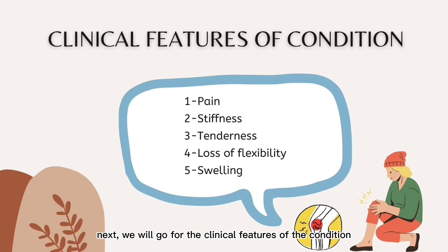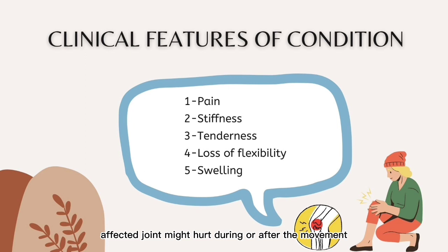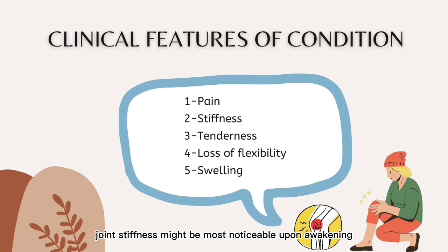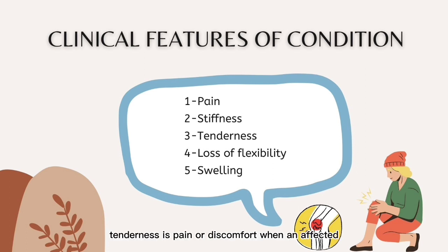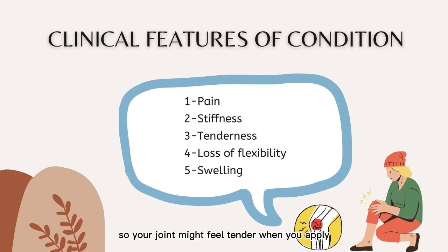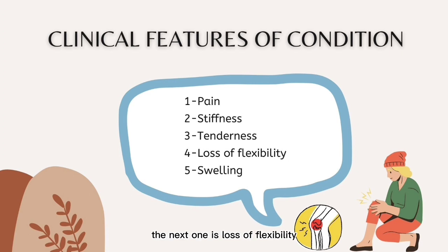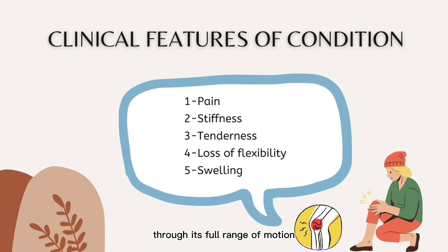The clinical features of the condition include: first, pain — the affected joint might hurt during or after movement. Second, stiffness — joint stiffness is most noticeable upon awakening or after being inactive. Third, tenderness — pain or discomfort when an affected area is touched, so your joint might feel tender when you apply light pressure to or near it. Fourth, loss of flexibility — you might not be able to move your joint through its full range of motion. And last, swelling.